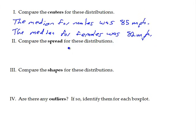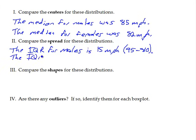For the spread, how the numbers are spread out, there are two that we can determine from the box plot. We can talk about the IQR, which is Q3 minus Q1. The IQR for males is 15 miles per hour, coming from Q3, 95 minus Q1, 80. The IQR for females is about 5 miles per hour, coming from Q3, 85 minus Q1, 80.